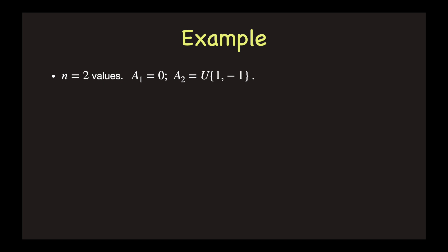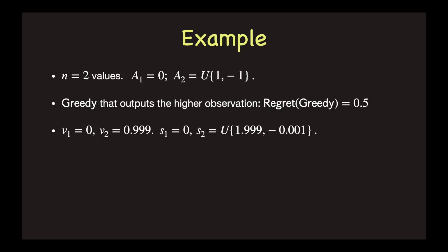Here is a simple example to get familiar with the setting. There are two values. The observation for the first value has no noise, and the observation for the second value has an additive noise either 1 or minus 1 with equal probability. What is a good algorithm here? One solution is the natural greedy algorithm, which simply picks the value with a higher observation.